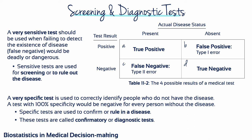A very specific test is used to correctly identify people who do not have the disease. A test with 100% specificity would be negative for every person without the disease, so a positive result on such a test means it is very likely that the disease is present. A test with high specificity results in few false positives and should be used when false positives could be dangerous or serious. For example, you would not want to start someone on chemotherapy unless you were very certain that the person had cancer. Very specific tests are used to confirm or rule in a disease; these are called confirmatory or diagnostic tests.